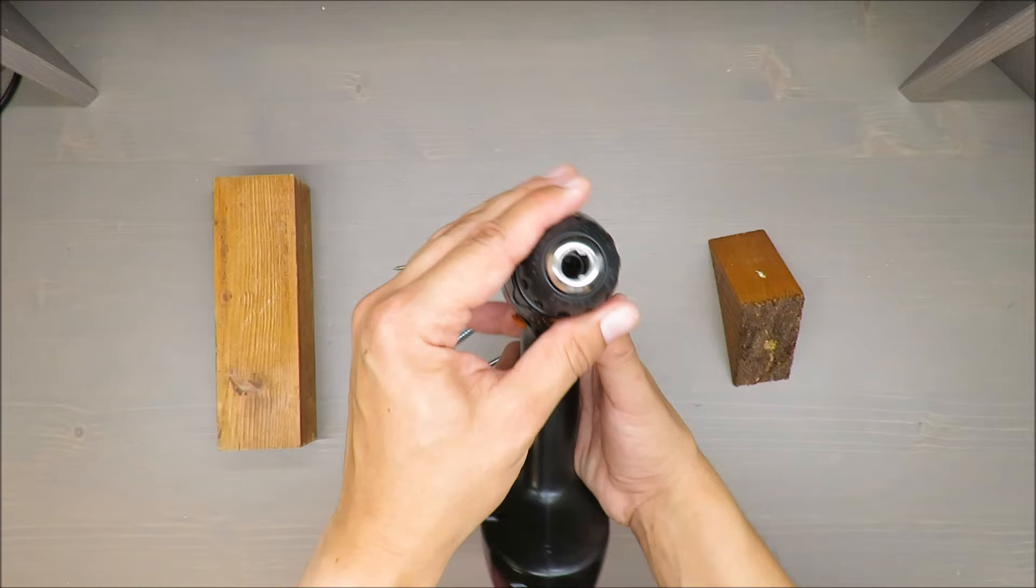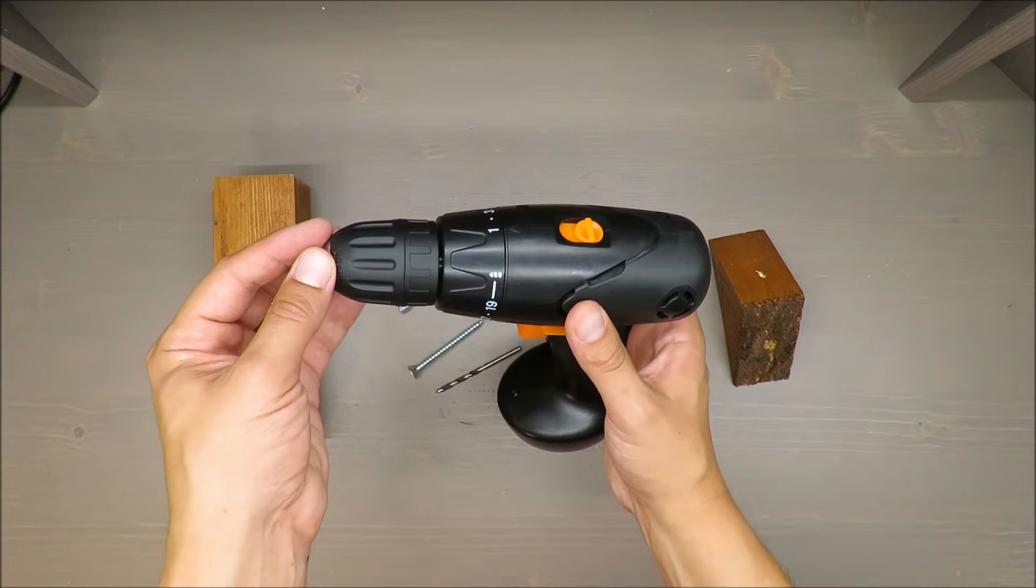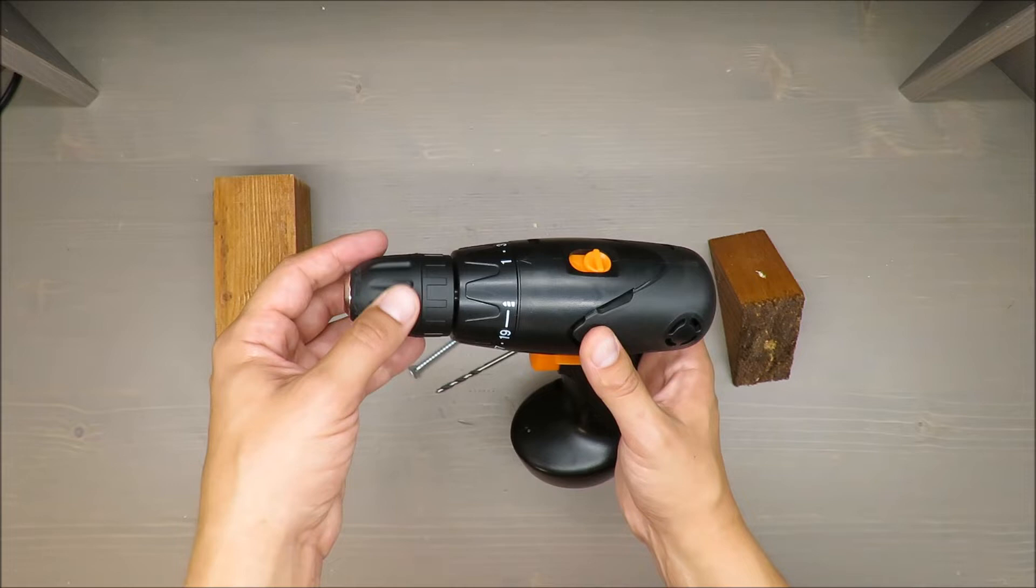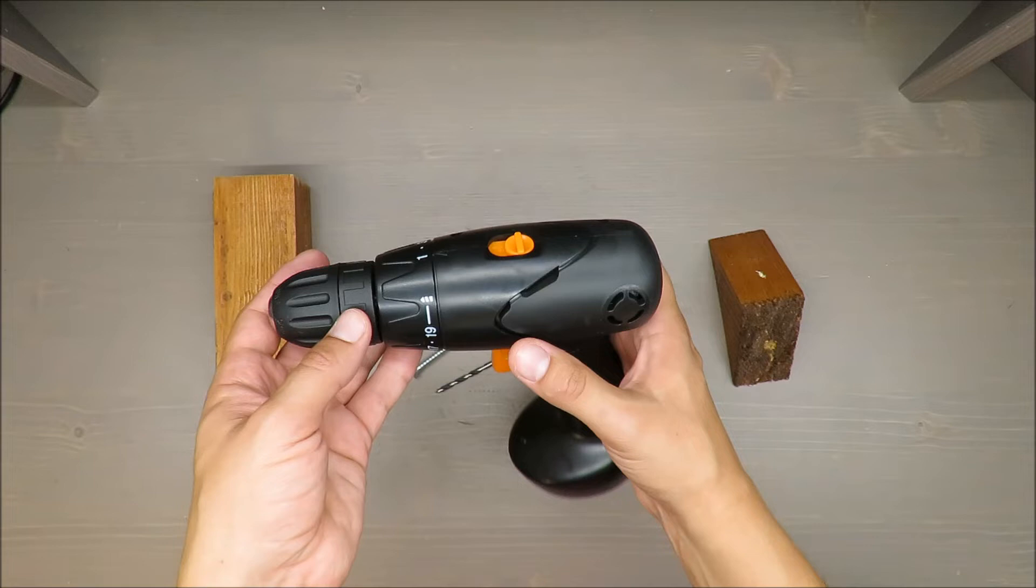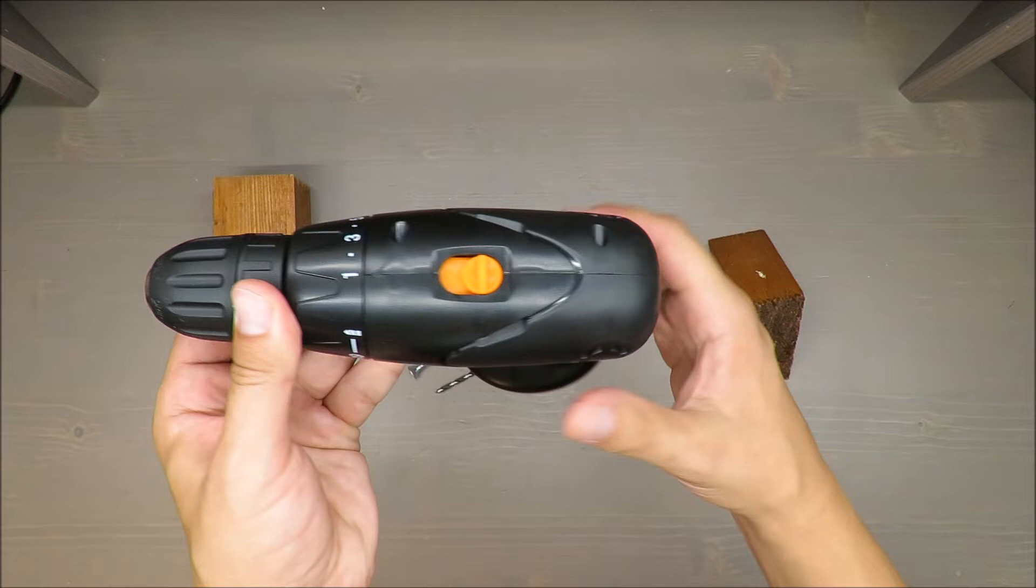Maximum torque of 16 newton meters - could be more but it's enough. Chuck capacity is from up to 10 millimeters. Adjustable torque, 19 positions and drill mode.